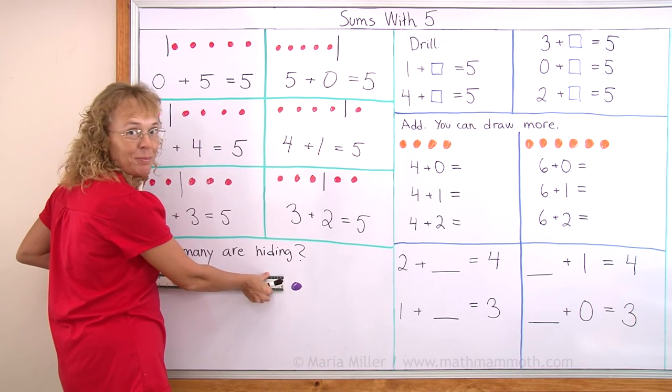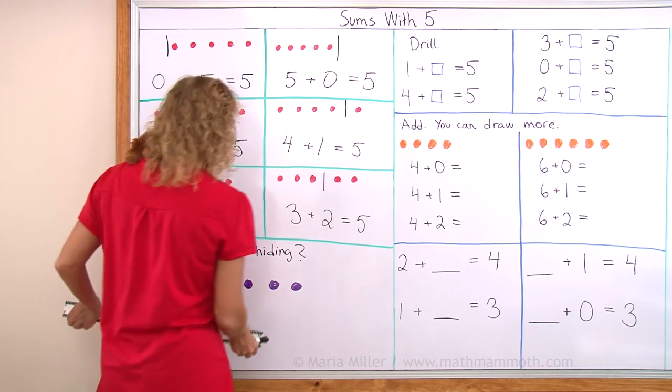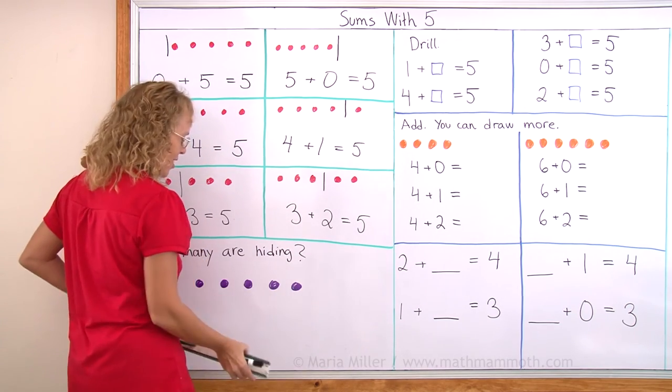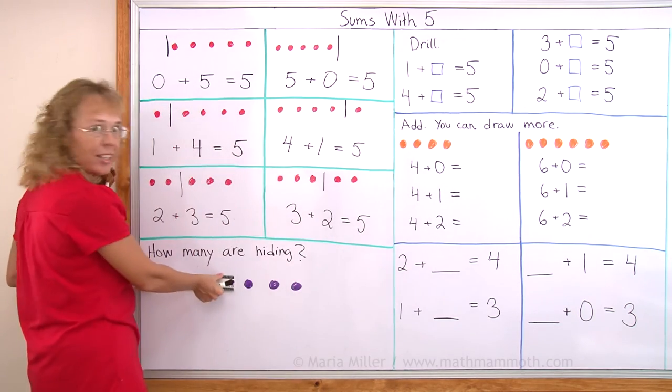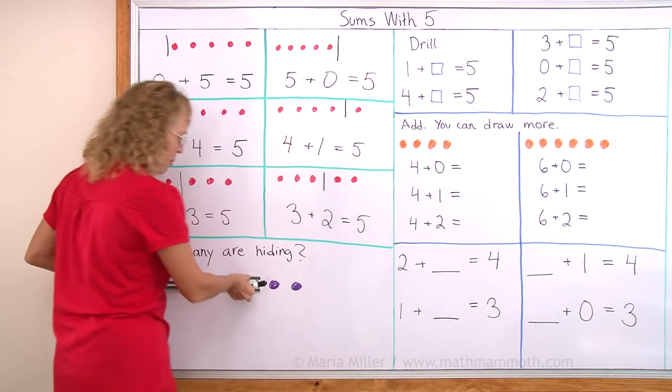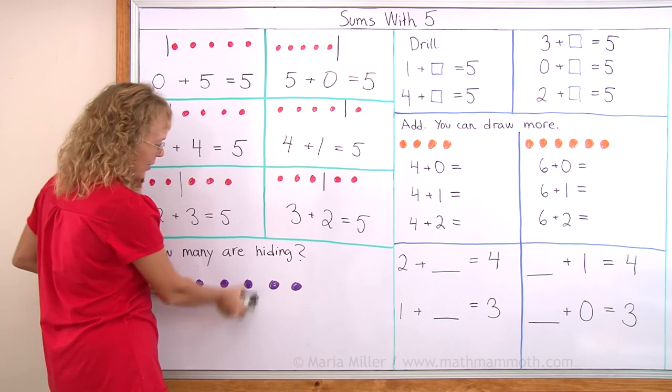How many are hiding? Right. Four are hiding. How many are hiding? All five are hiding. How many are hiding? Two. Correct. How many are hiding? Three are hiding.